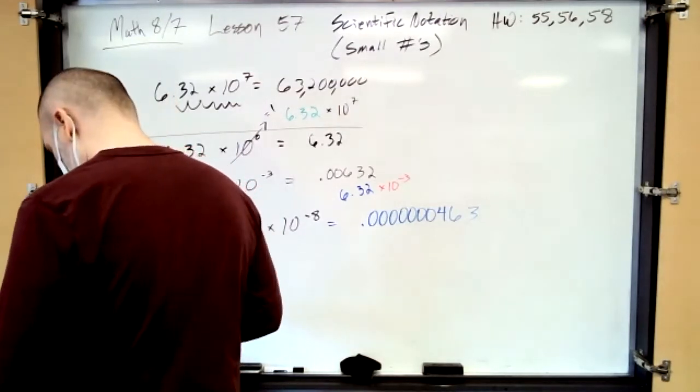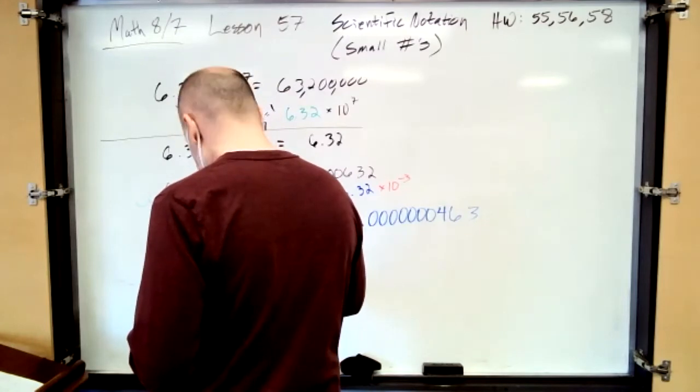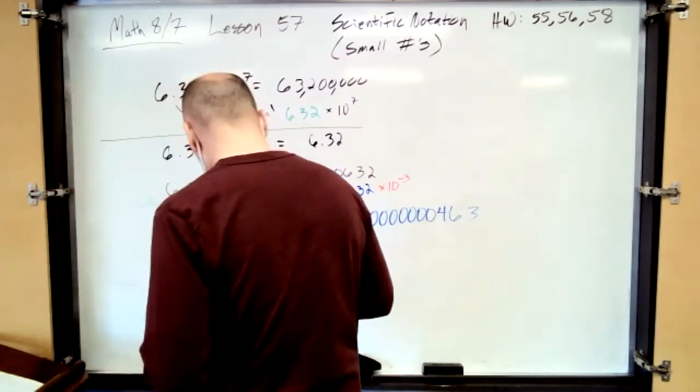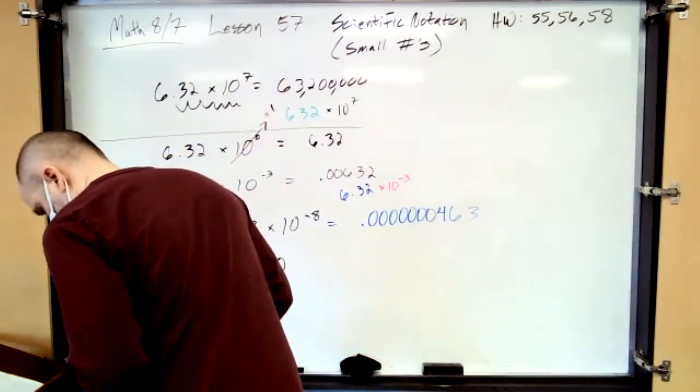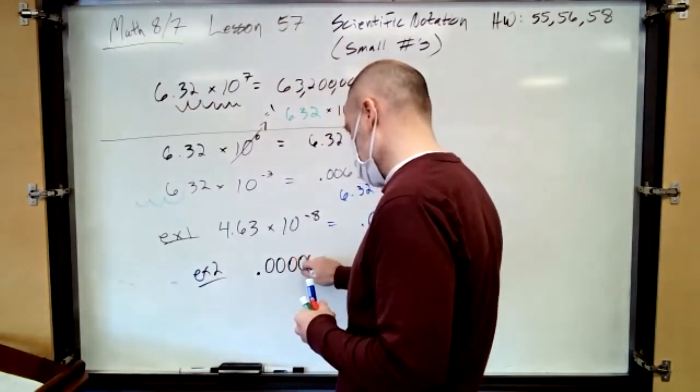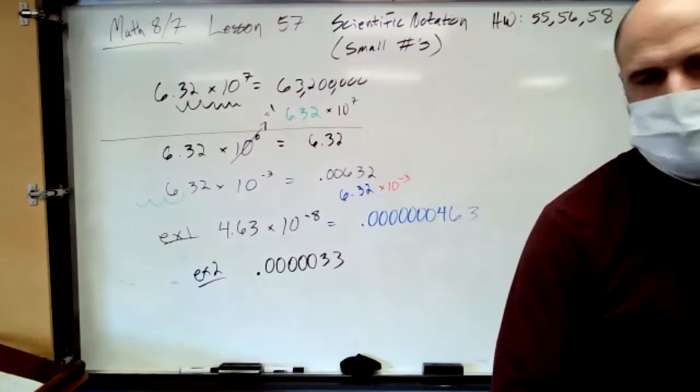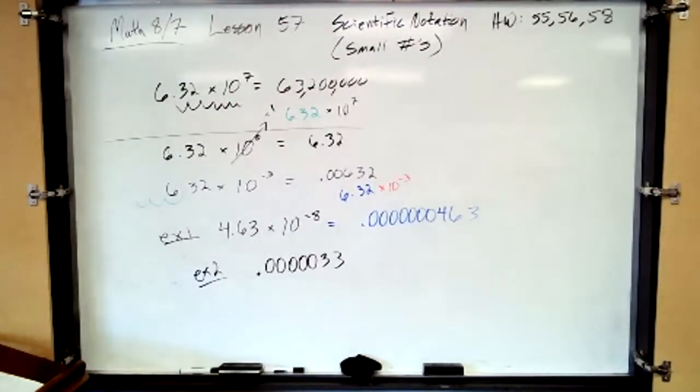Does that make sense? Because one place is going to take care of that non-zero digit, then you have to go seven more places, so you need seven more zeros. Okay, now let's go backwards. So this one will be for another flak attack coupon, first one to get it will get two, and then everyone else who gets it will get one.